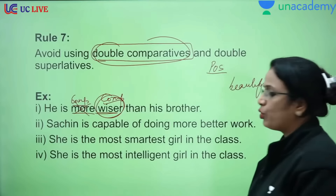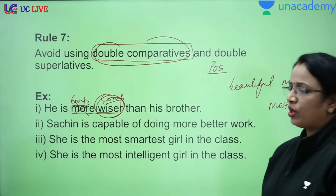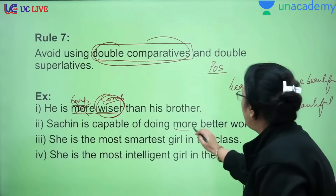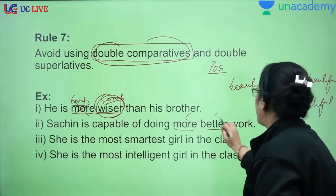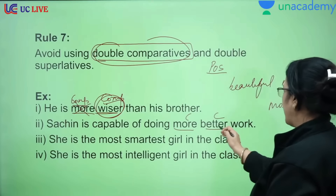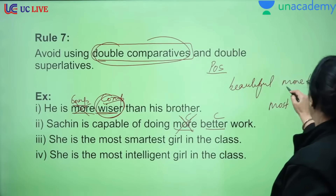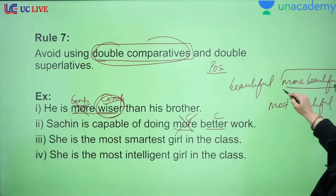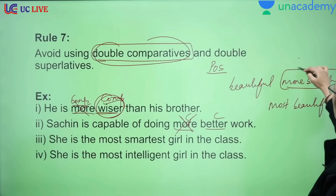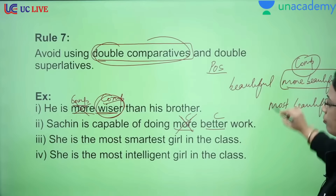'Sachin is capable of doing more better work.' Here 'more' is also comparative and 'better' is also comparative — two comparatives in one sentence, which is incorrect. Compare this to 'more beautiful', which is correct because 'beautiful' cannot form a comparative with '-er', so there is only one comparative marker there.